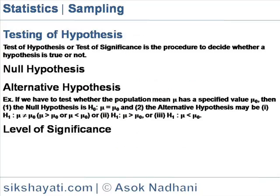Testing of Hypothesis. One objective of sampling theory is hypothesis testing. Test of Hypothesis or test of significance is the procedure to decide whether a hypothesis is true or not.